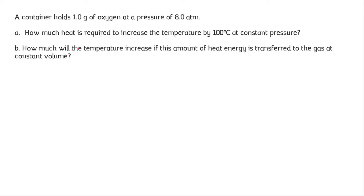In this question, a container holds 1 gram of oxygen gas at a pressure of 8 atm. We are heating the container, increasing the temperature of the gas by 100 degrees Celsius at constant pressure. We have to calculate the heat required to increase the temperature by 100 degrees Celsius at constant pressure, and also determine how much the temperature increases if the same amount of heat is gained by the gas at constant volume.